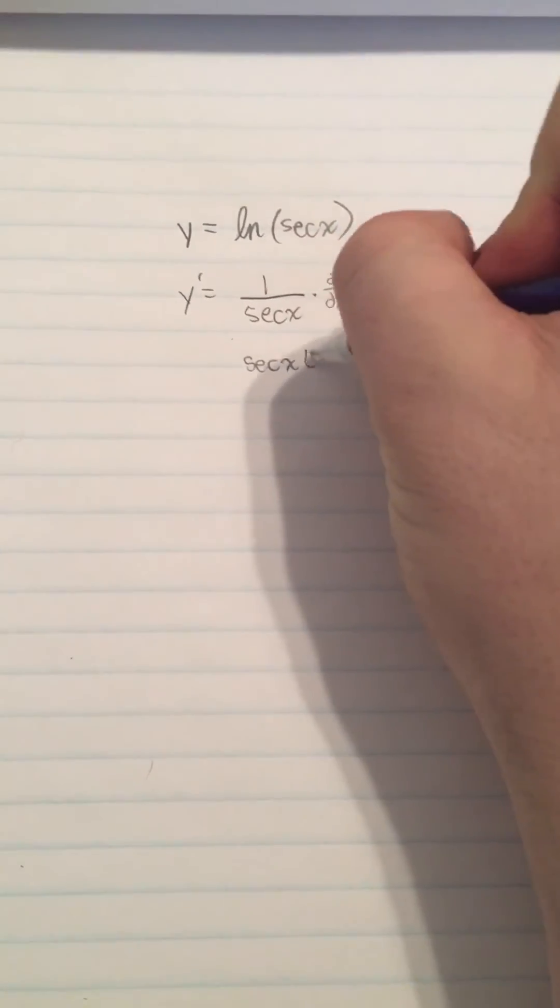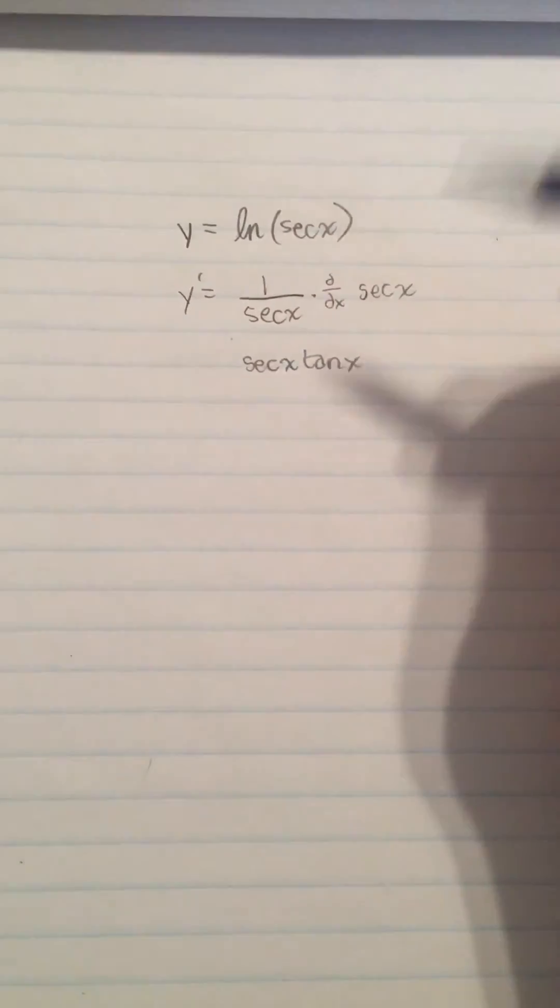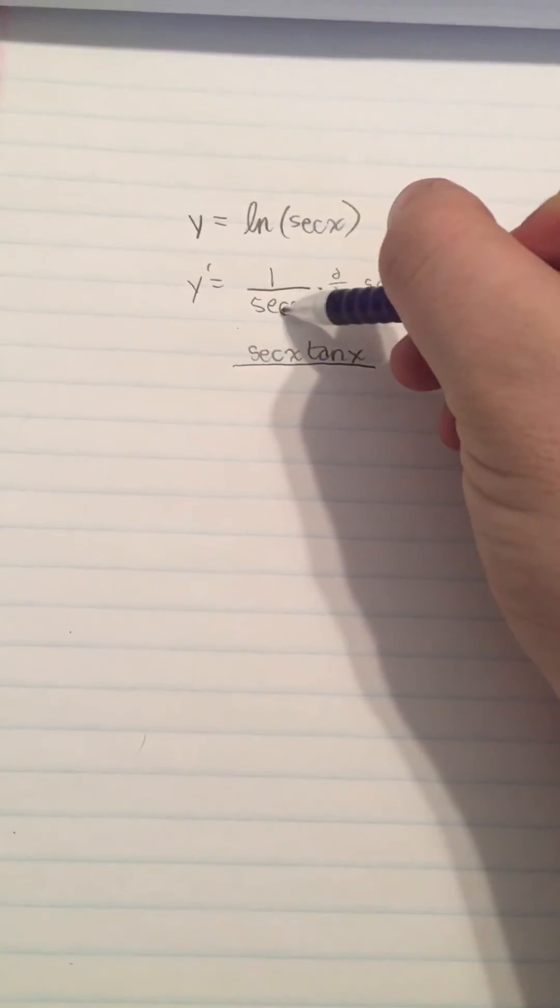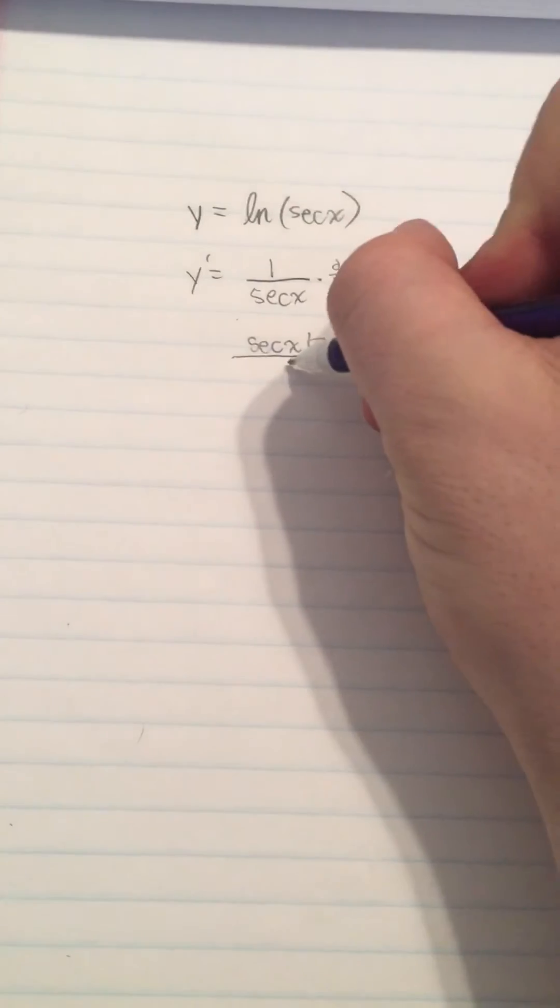So putting these together, the derivative of secant x is secant x tangent x, or secant x times tangent x, over, we're going to bring back our 1 over secant x.